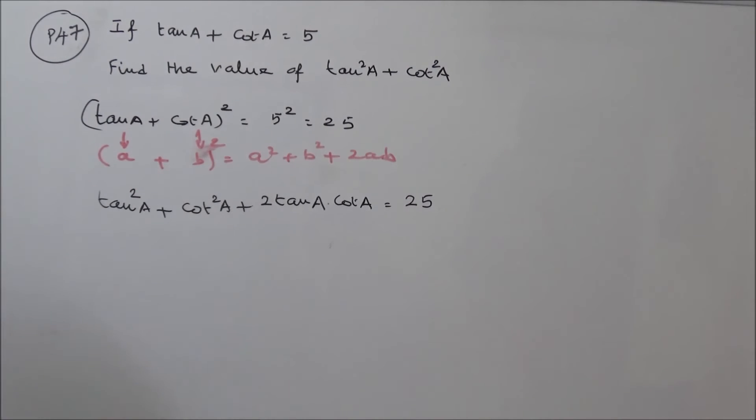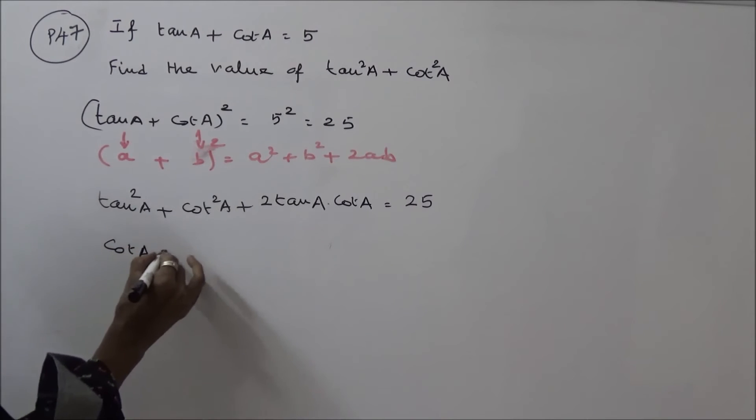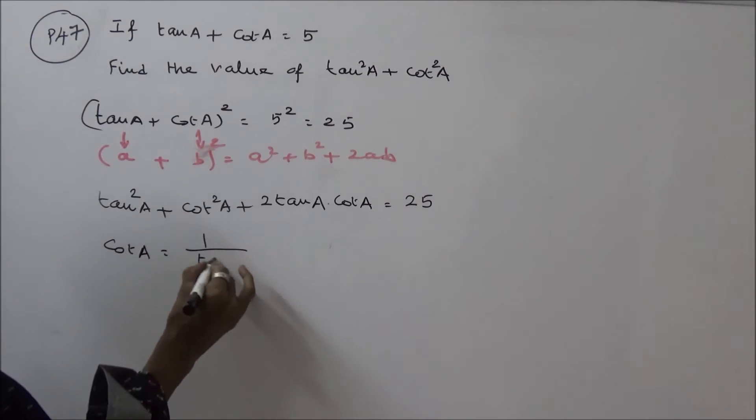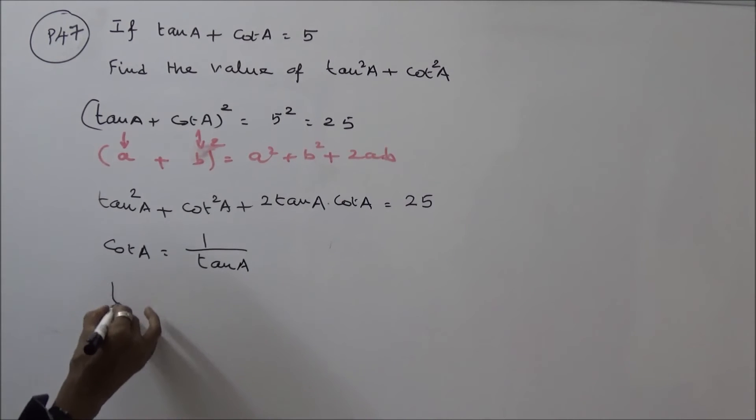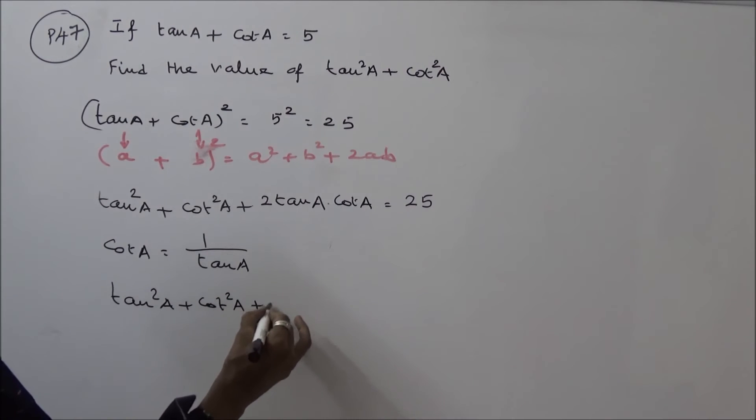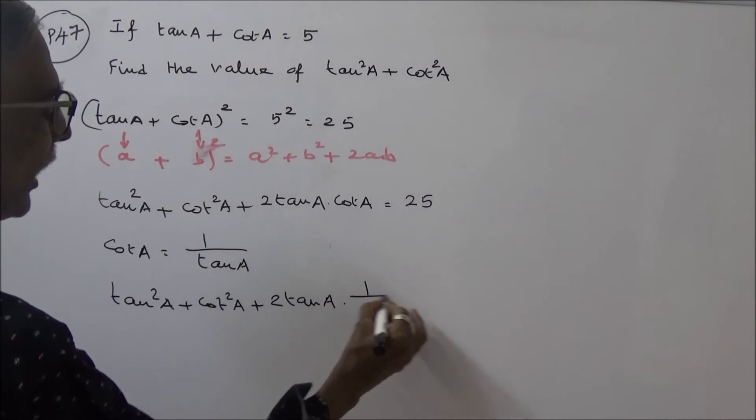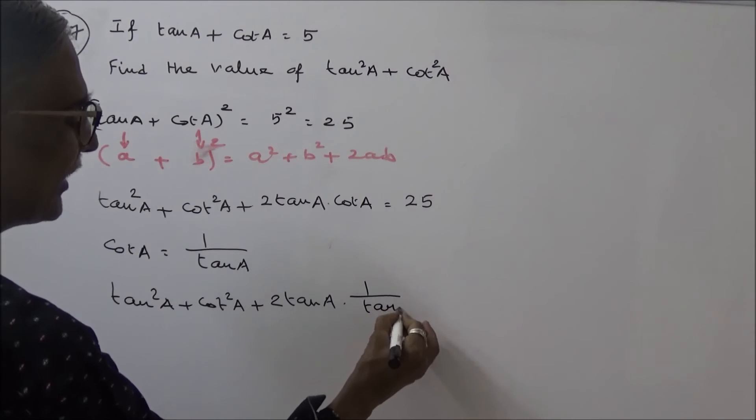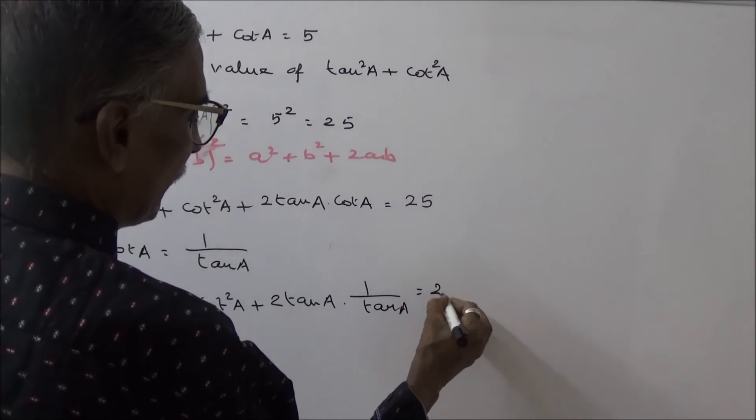Okay, so we know that cot A is equal to 1 by tan A. I can rewrite the equation. Tan square A plus cot square A plus 2 tan A into 1 by tan A. Instead of cot A, I write 1 by tan A. That is equal to 25.